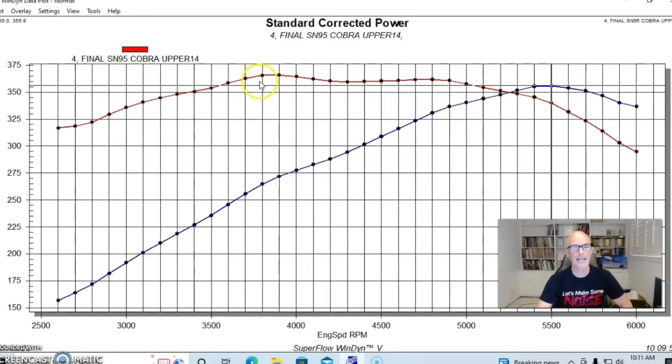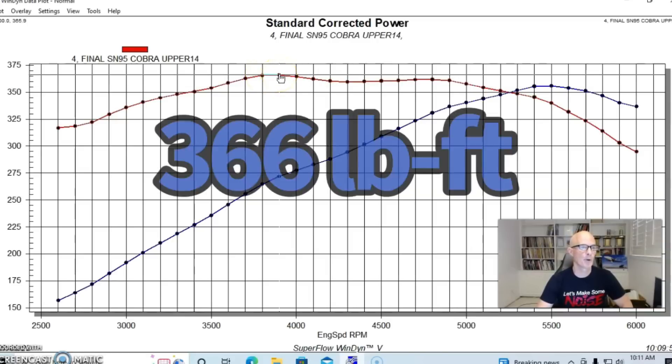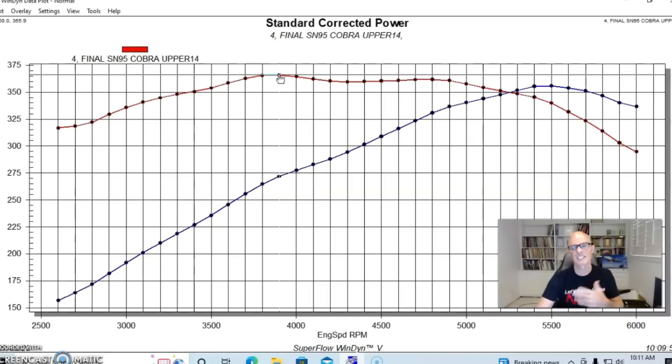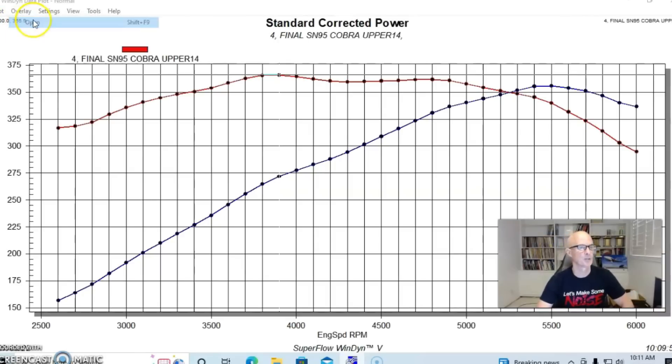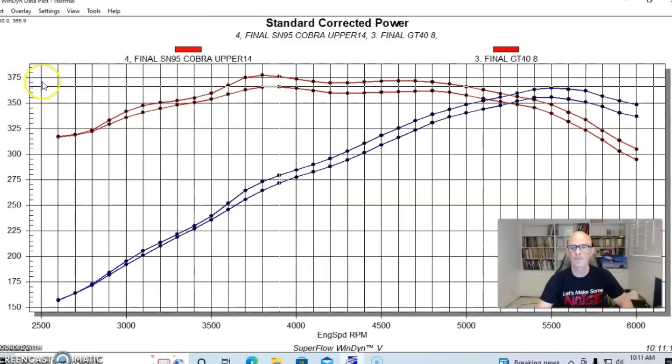Our combination produced 356 horsepower, 355.8 and 365.9, so 366 foot-pounds of torque. To give you an idea, here's how it compared to the tubular GT40. It was down a little bit and we were surprised.